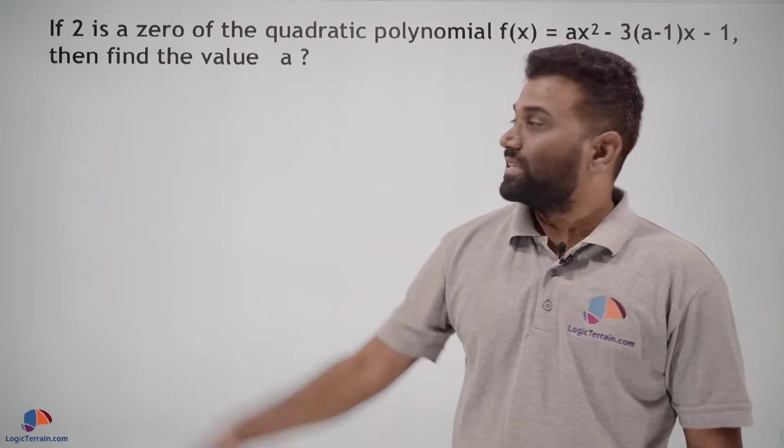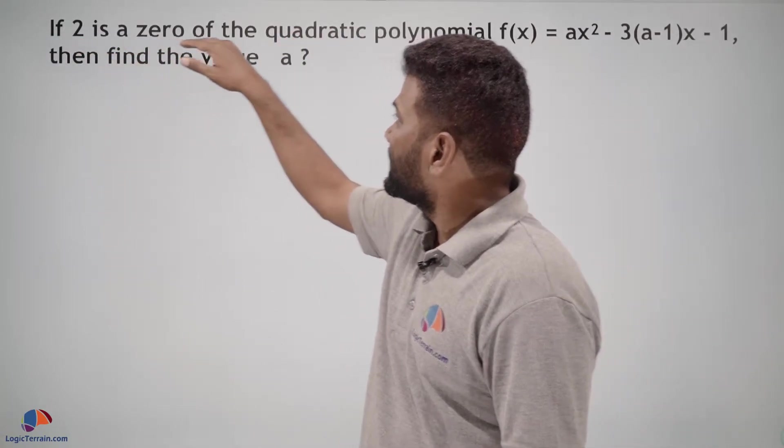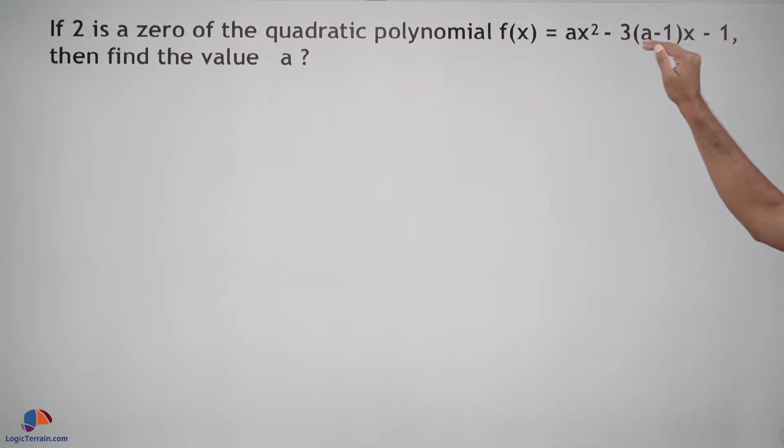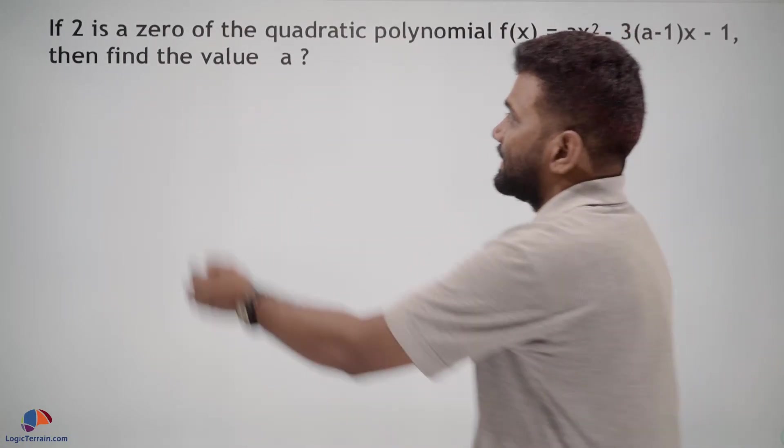Hello dear students, here is our question. If 2 is a zero of the quadratic polynomial f(x) = ax² - 3(a-1)x - 1, then find the value of a. Clear, here it is given.